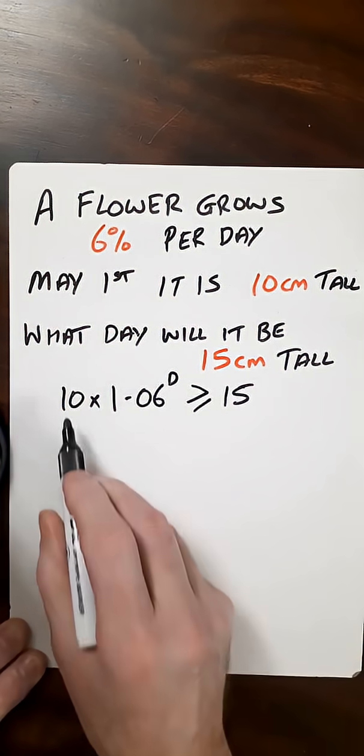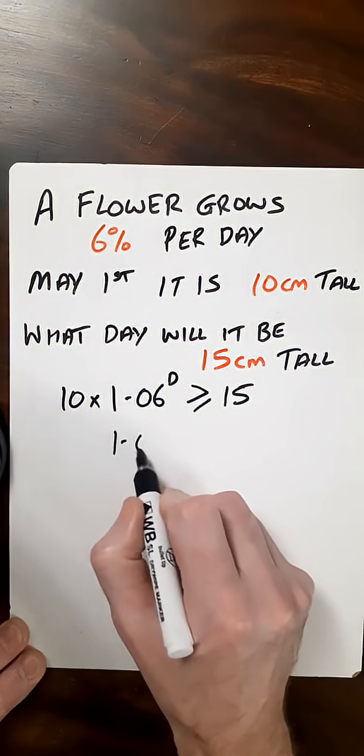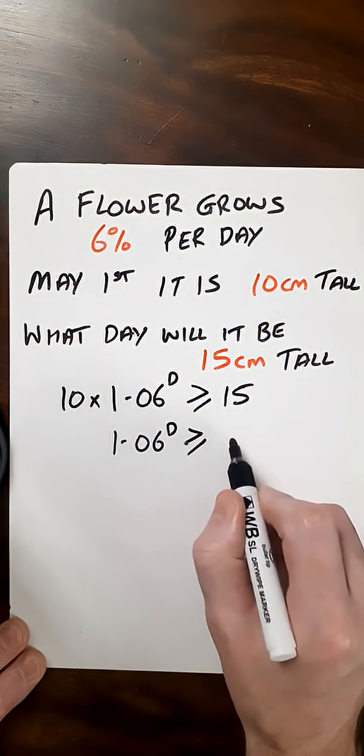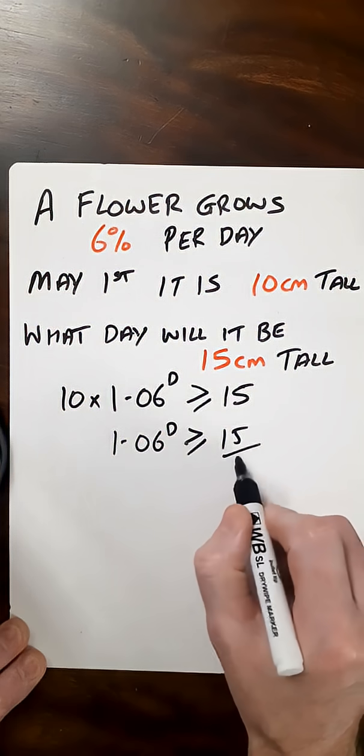So now solve for D. So divide by 10 on both sides. So 1.06 to the power of D is greater than or equal to 15 divided by 10.